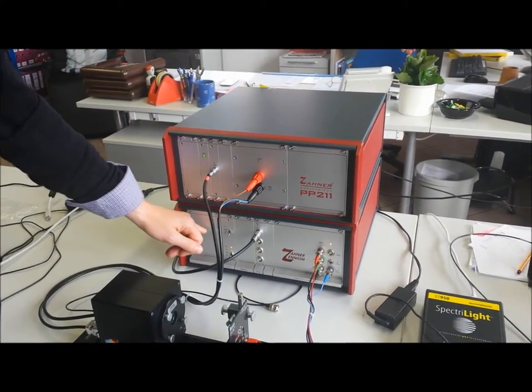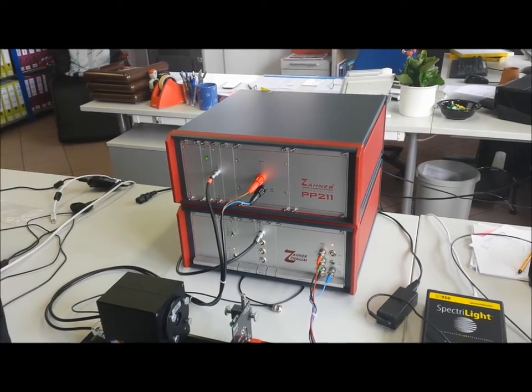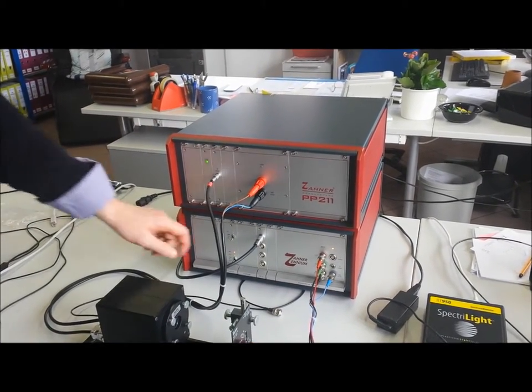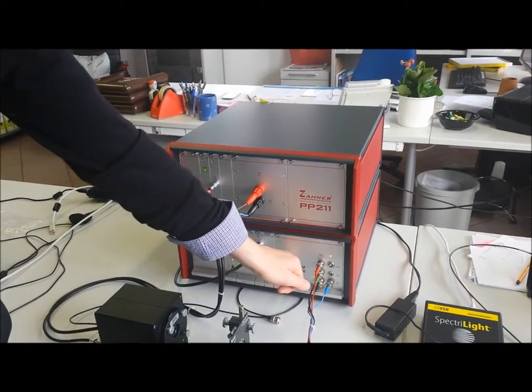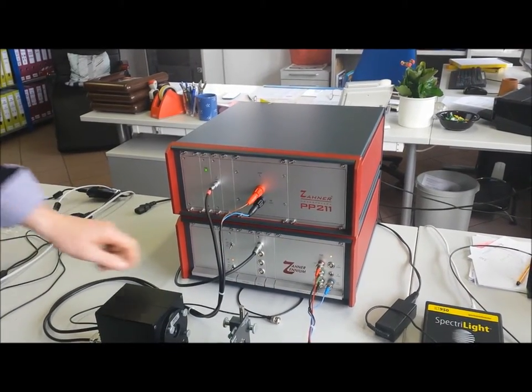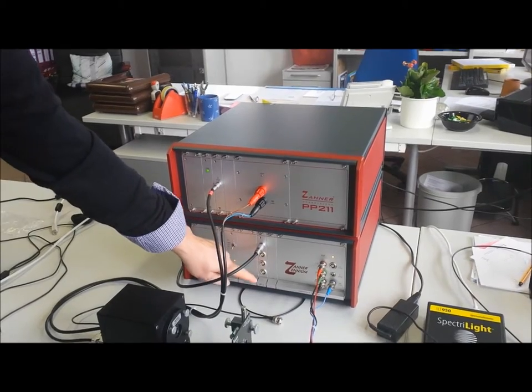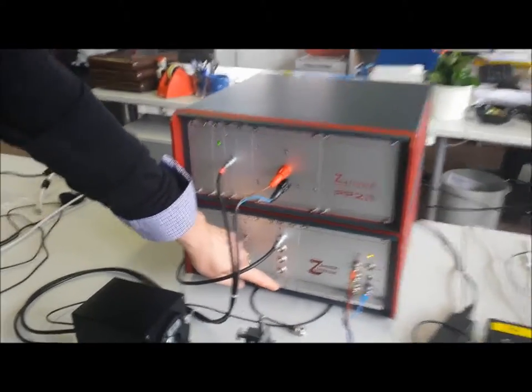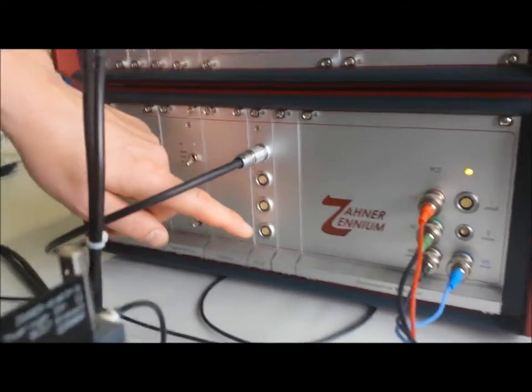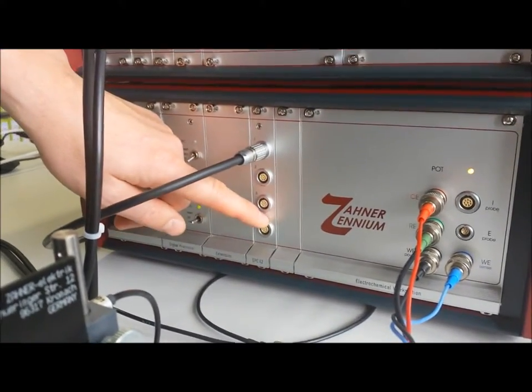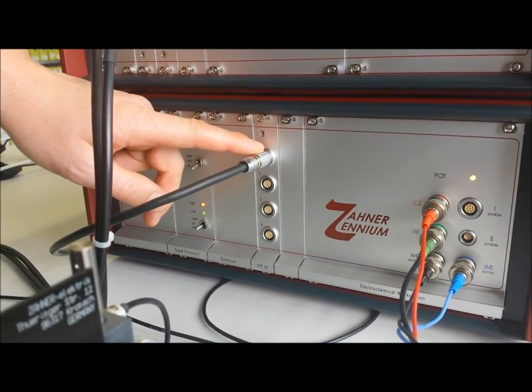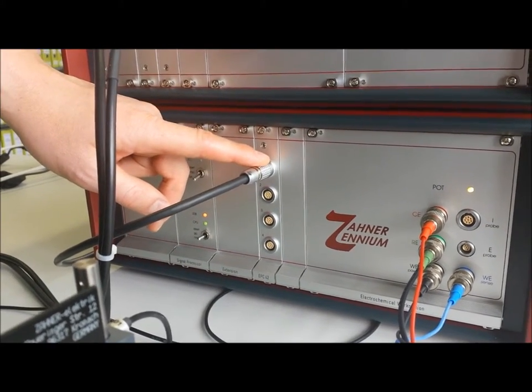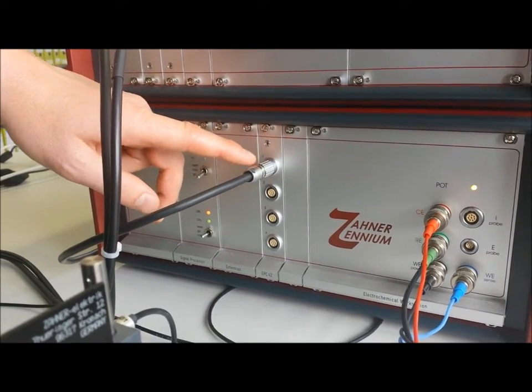The Xenium system is both a potentiostat and has an impedance spectrometer on board. The PP211 is acting as a slave to the Xenium via this card here. This EPC42 card can control up to four slaves, and this lemo connector is connecting into the back of the PP211 potentiostat.